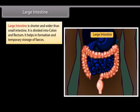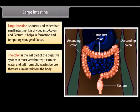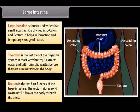Large intestine is shorter and wider than the small intestine. It is divided into colon and rectum. It helps in formation and temporary storage of feces. The colon extracts water and salt from solid wastes before they are eliminated from the body. The rectum is the last six to eight inches of the large intestine and stores solid waste until it leaves the body through the anus.